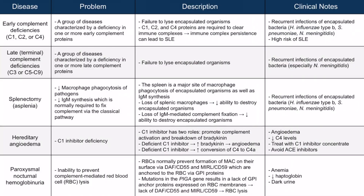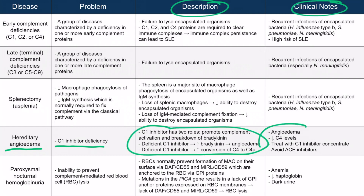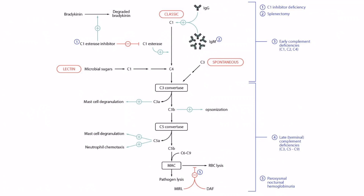Let's briefly discuss hereditary angioedema, caused by a C1 inhibitor deficiency. The description and clinical notes are discussed in detail in the previous video on the kinin system, and those details are reiterated here for completeness. Most importantly, I want you to see visually how the complement system intersects with the kinin system. We see C1 inhibitor here, which upregulates the degradation of bradykinin. This table shows its role in the complement system.